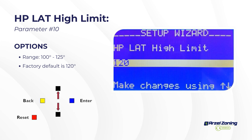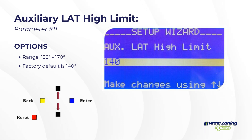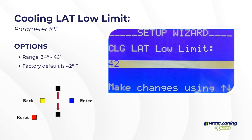The heat pump high limit monitors compressor temperature — if it gets too hot the system stages back, and if it stays too hot it stages off while continuing to run Y1 and G to the furnace air handler. Similarly, gas furnace or electric strip heat limits will stage back then stage off if temperatures remain too high. There is a three-minute delay between each staging action, giving the system time to drop below the threshold.